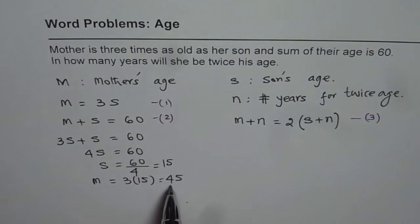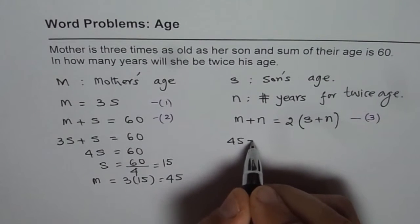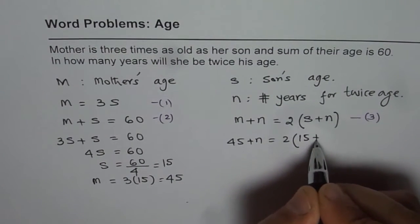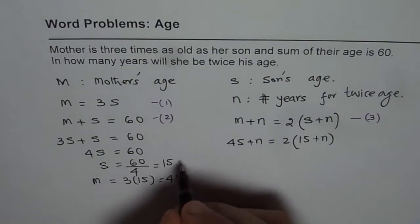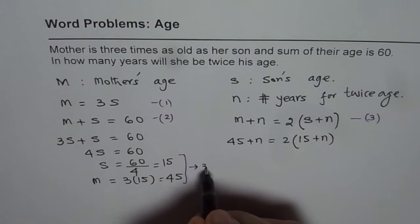M is 45, S is 15. Let's substitute. So we have 45 plus N equals 2 times 15 plus N. So let's substitute these values from here into our equation 3. We are substituting this in equation 3.